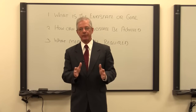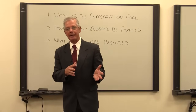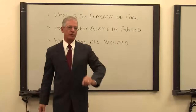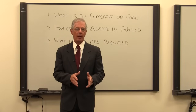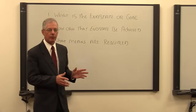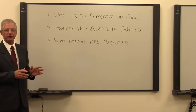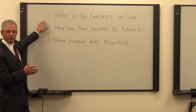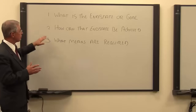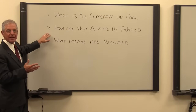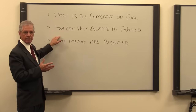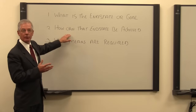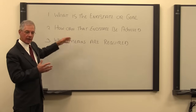It starts with the systems perspective. You view the friendly and adversary entities as systems, but it uses the strategic framework of ends, ways, and means to answer three basic questions about the system. First, what is the end state or goal of the system? Second, what are the ways that the end state can be achieved? Lastly, what are the means required to execute the way, or how, that achieves the end state?